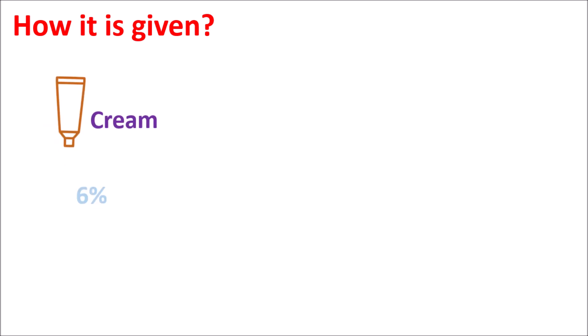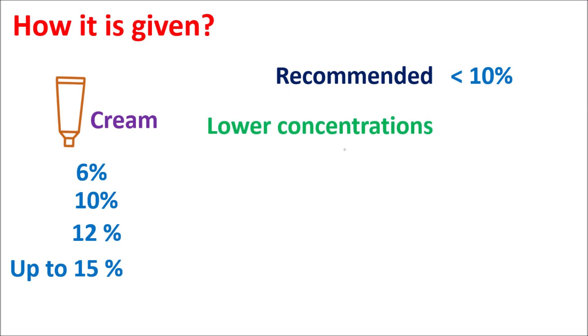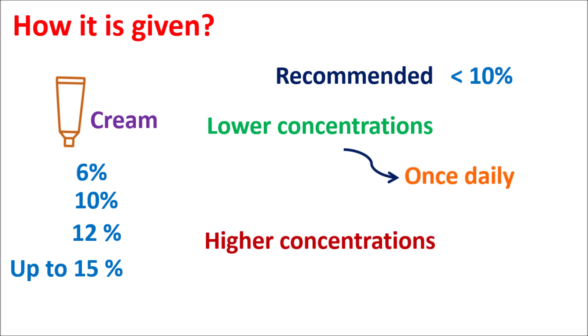Glycolic acid is available as a cream at different strengths: 6%, 10%, 12%, and even up to 15%. It is always recommended that this cream be used at a concentration less than 10%, where it produces less skin irritation and skin burning. For instance, glycolic acid at 6% cream is sufficient for exfoliation as well as removal of dark spots. When used at lower concentrations, this cream can be used once daily, but when used at higher concentrations around 10%, it should be used twice a week to minimize side effects.